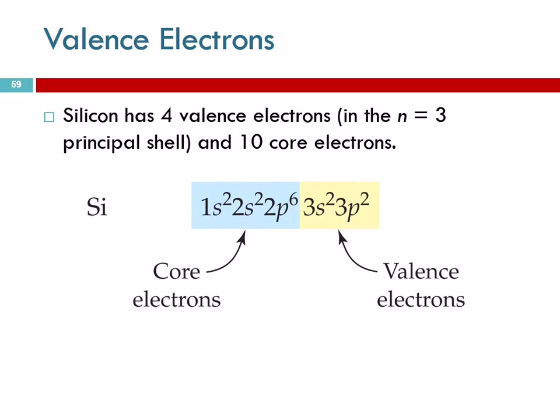Understanding how many valence electrons an atom has is really important for understanding how that atom behaves. If we look at silicon, here's the electron configuration for silicon. And if we look through these numbers, 1, 2, 3, 3 is the highest principal shell. 3 is the highest floor in the hotel that has anybody on it.